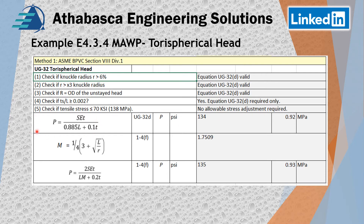Now we do our calculation because we want to find the maximum allowable working pressure. We take UG-32D and work it out, and we calculate our pressure to be 134 PSIG. We also do some additional checks — just for interest, in case we needed to go to Appendix 1-4F, what would happen? We take that equation, it's a geometry setup, and we get 1.7590. We calculate the pressure and get basically the same answer.